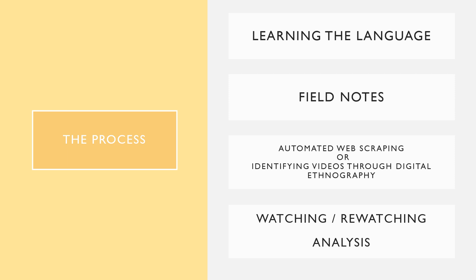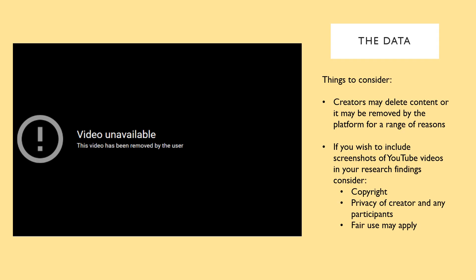Here's an indication of what the process might look like if you were doing qualitative analysis on YouTube. You might spend some time learning the language and familiarizing yourself with the community you're interested in. Then you could take some field notes from a period of observation. Then you might use an automated web scraping tool to collect videos for analysis, or identify the videos through your digital ethnography. Then you might watch and re-watch the videos to undertake content analysis to identify relevant themes. Your process might look quite different — this is just an indication. Remember that conducting ethical research is an ongoing process, so keep issues of ethics and privacy in mind throughout your data collection process and writing up. Reflecting on whether your research does justice to your participants and is generous to them is important.